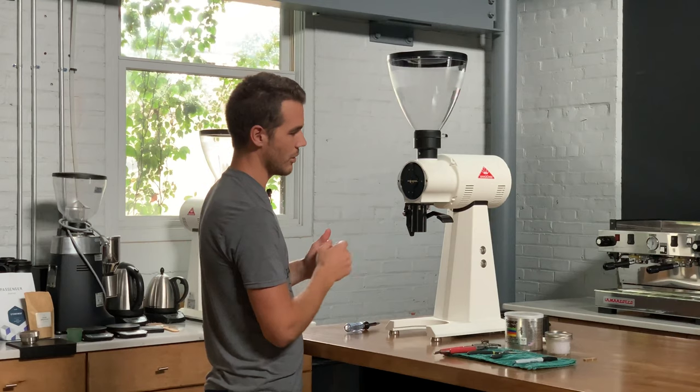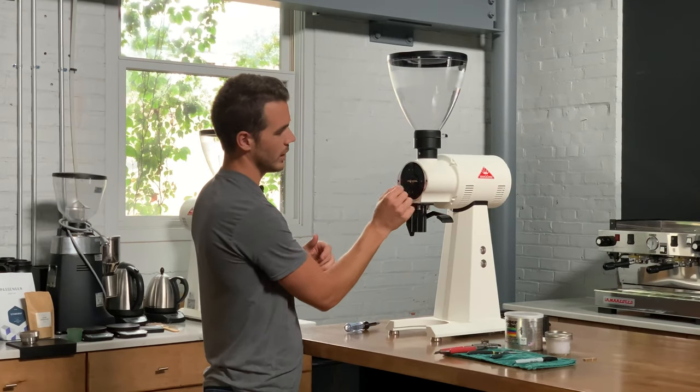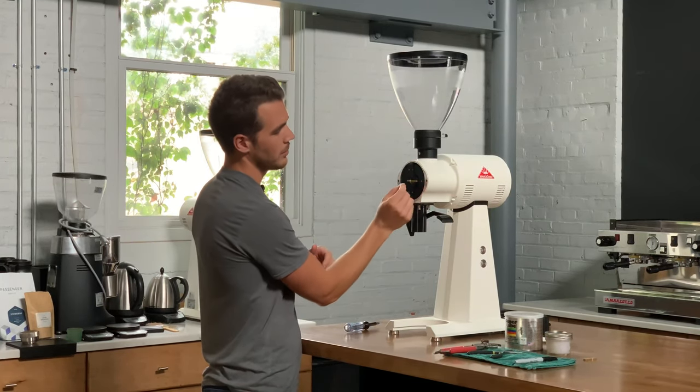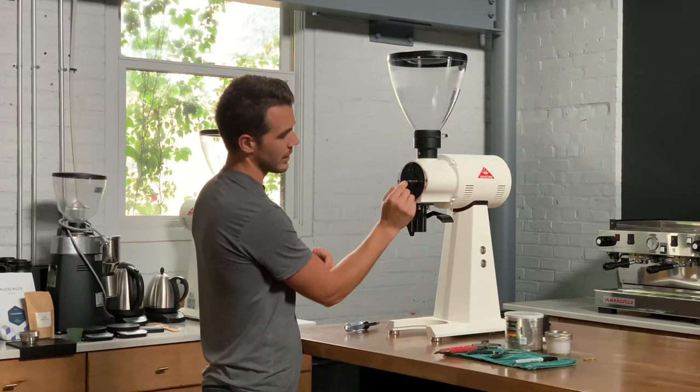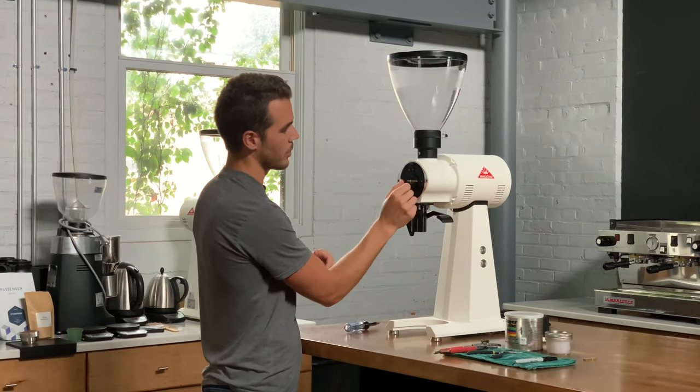So if you just do that now, if there's any grease on there, you can kind of take out the shear plate, wipe off the grease, make a mark with your Sharpie, and then scratch a little X into that burr carrier.